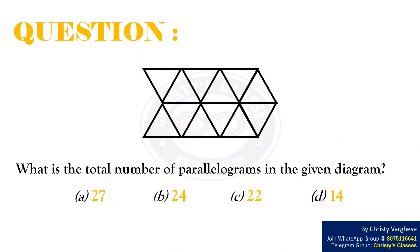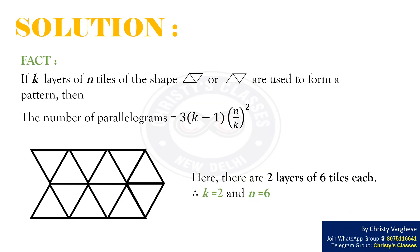Question: What is the total number of parallelograms in the given diagram? Options: A. 27, B. 24, C. 22, and D. 14.